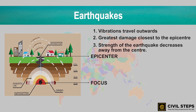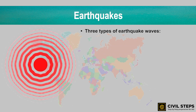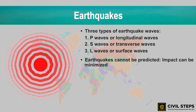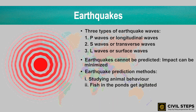The strength of the earthquake decreases away from the epicenter. There are three types of earthquake waves: P waves, also called longitudinal waves; S waves, also called transverse waves; and L waves, also called surface waves. Although earthquakes cannot be predicted, their impact can be minimized if we are prepared beforehand. Some common local earthquake prediction methods include studying animal behavior — for example, fish in ponds get agitated and snakes come to the surface.